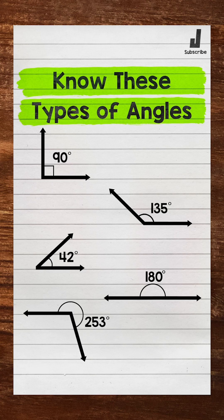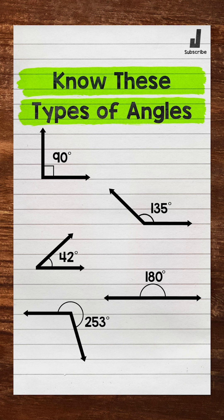This is Math with Mr. J. Let's go through five different types of angles. We will start with 90 degree angles, which are called right angles.